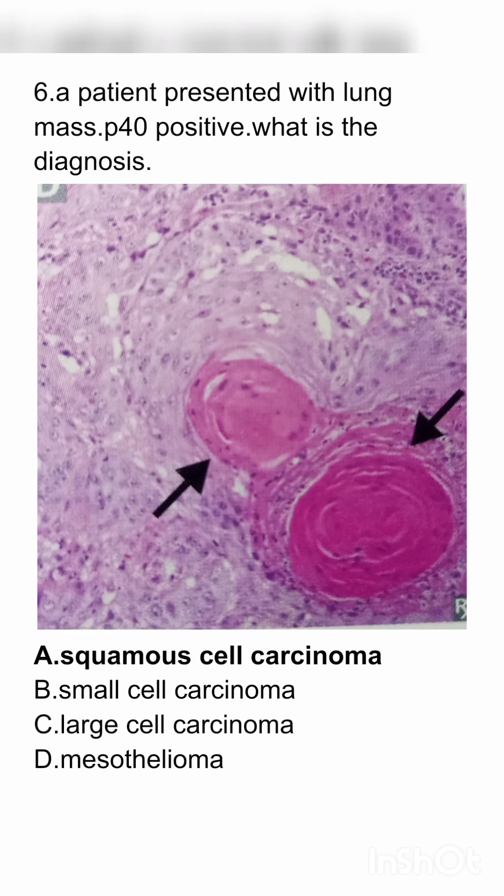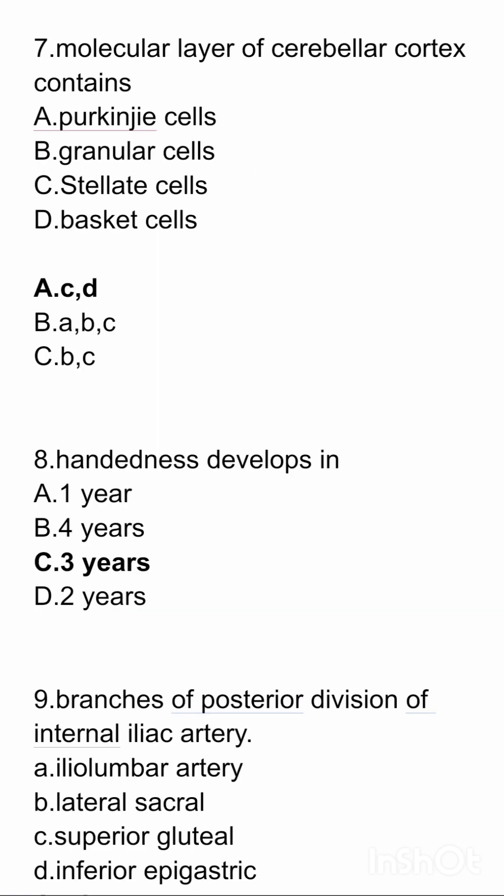A patient presented with a lung mass, P40 positive. What is the diagnosis? The image is given below. Options are squamous cell carcinoma, small cell carcinoma, large cell carcinoma, mesothelioma. The answer here is squamous cell carcinoma.